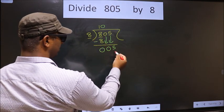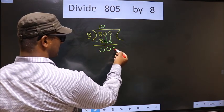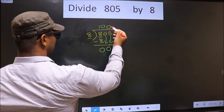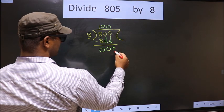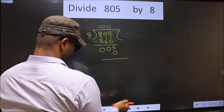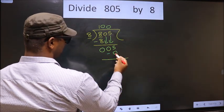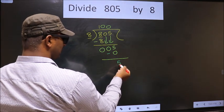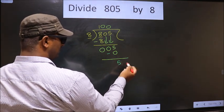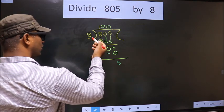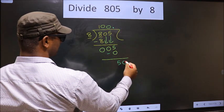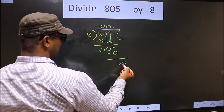If we write 8 here, that is larger than 5, so what we do is we take 0 here. So 8 into 0 is 0. Now you subtract: 5 minus 0 is 5. We did not bring any number down, and 5 is smaller than 8, so now we can put a dot, take 0 here. So 50.